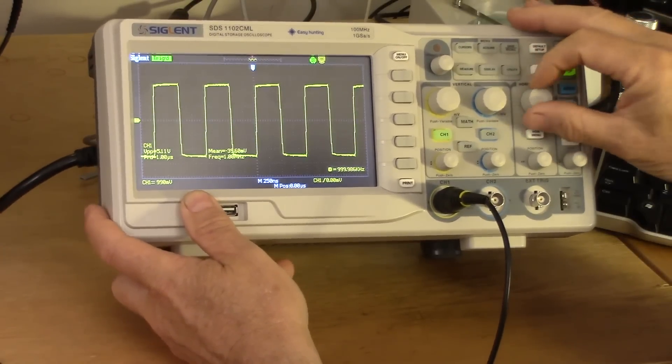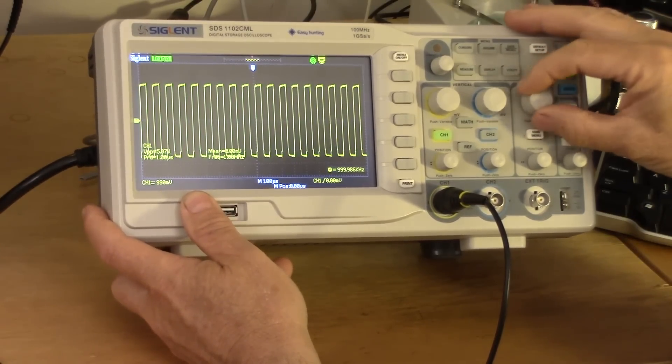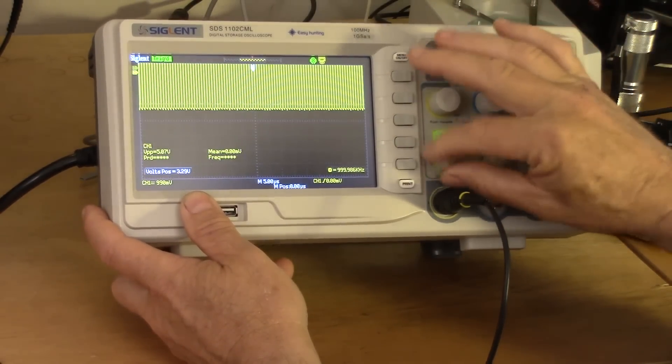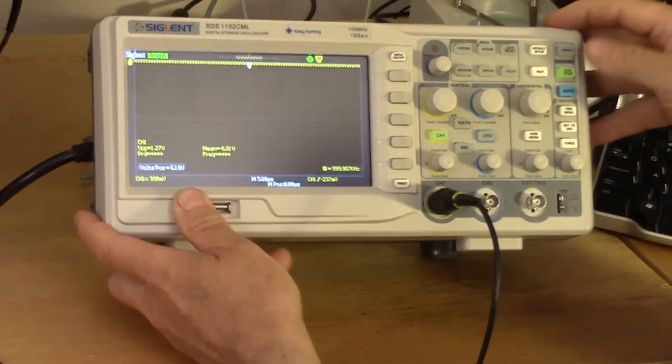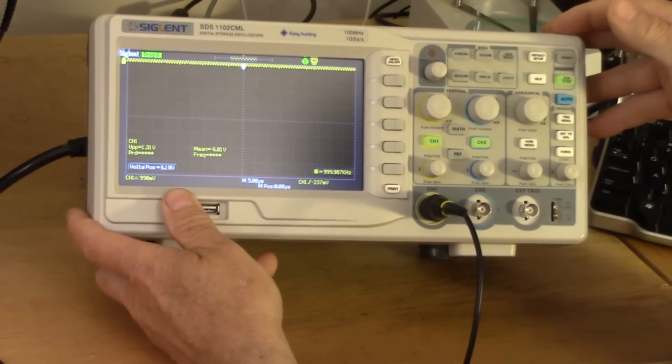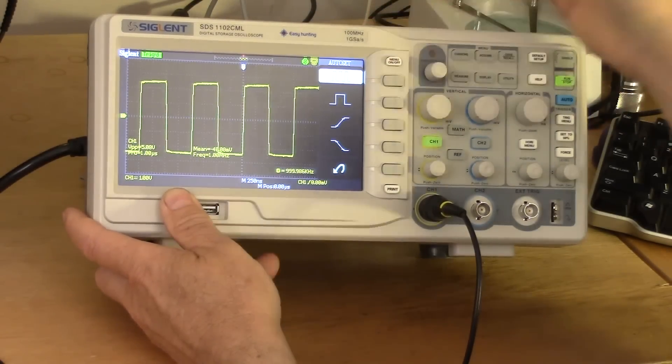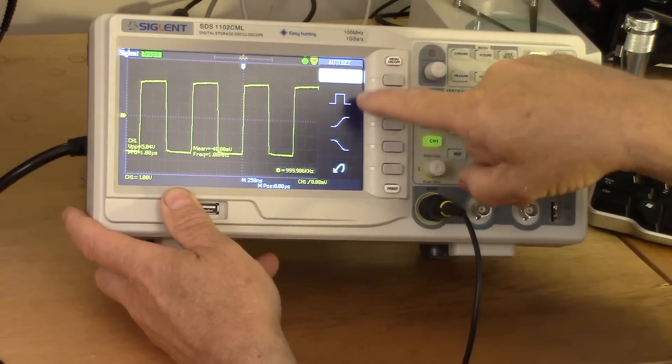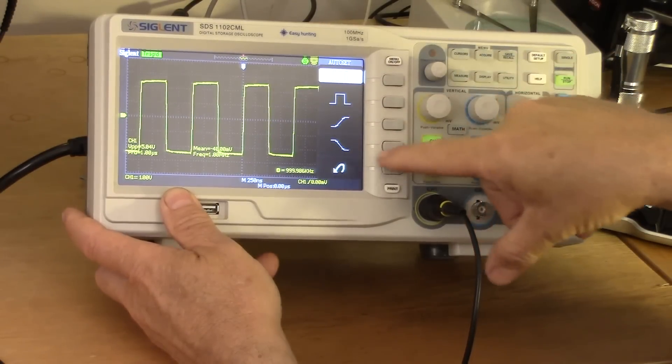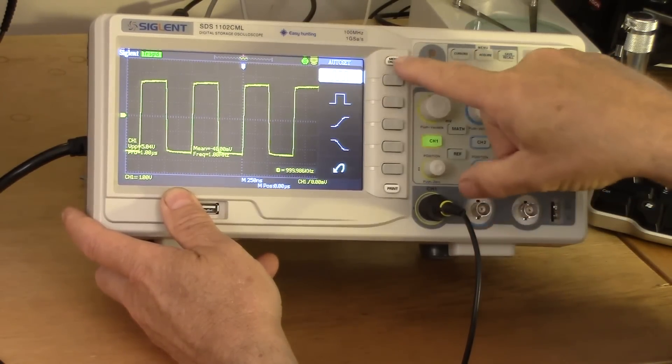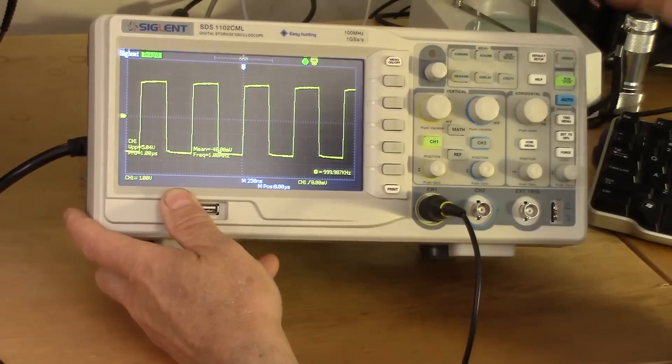One feature that's nice is the auto set. Now, all scopes today have some sort of an auto set. So if you get this in some weird mode, you press auto and it brings it back. On most of the scopes I use, it brings it back to a mode I don't like. This one always seems to make a decent decision. And when you do that, it allows you to decide which triggering style you'd like using these buttons. I can clear that menu by pressing that button.